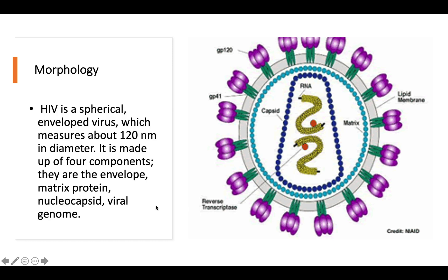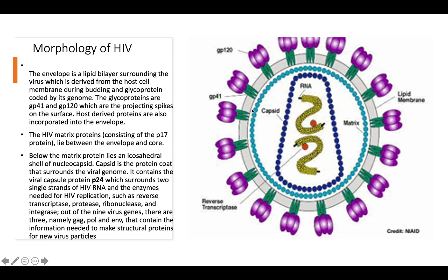The core refers to the capsid. Below the matrix protein is the icosahedral nucleocapsid. The capsid is the protein coat that surrounds the viral genome, and it contains the viral capsid protein known as P24. So the matrix contains P17, and the nucleocapsid contains P24, which surrounds the two single-stranded HIV RNA molecules.